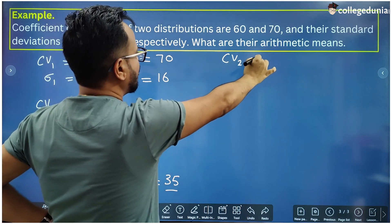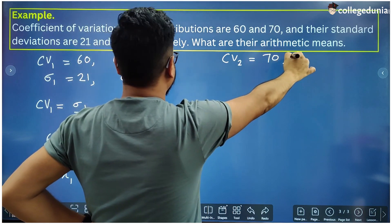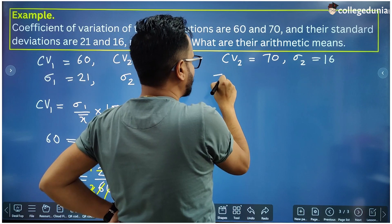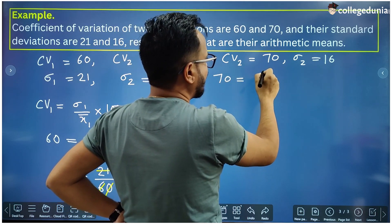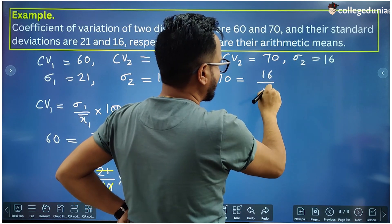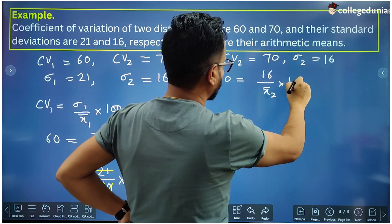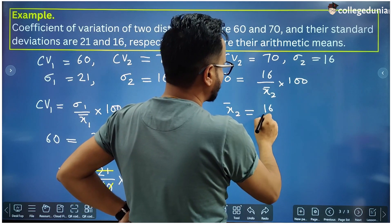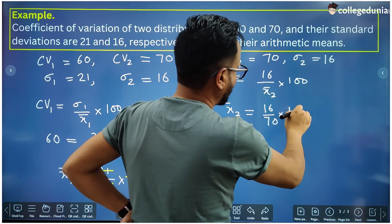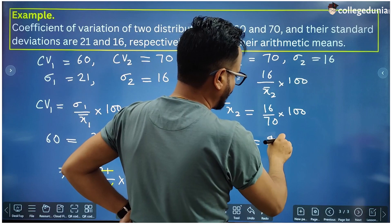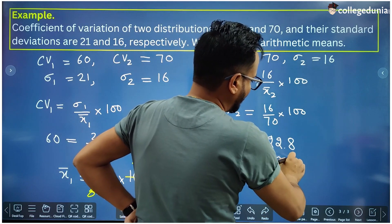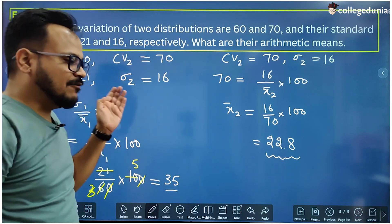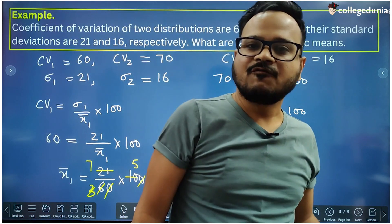For the second distribution: CV2 is 70 and sigma2 is 16. Putting values in the formula, CV2 equals sigma2 divided by x2-bar into 100. So x2-bar is 16 by 70 into 100, which gives 22.8 — that is the mean in this case. This was the meaning of the formula and examples based on coefficient of variation.